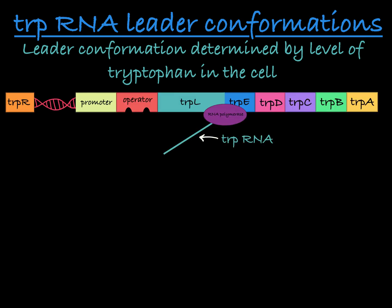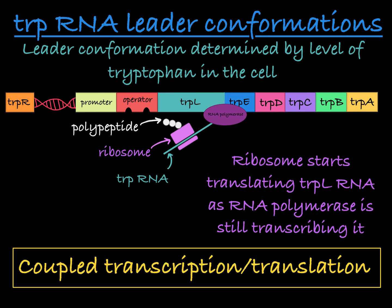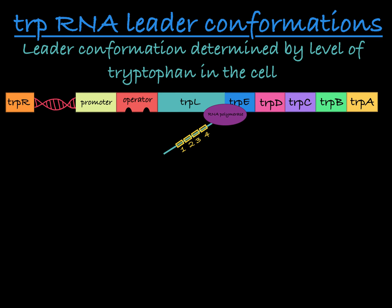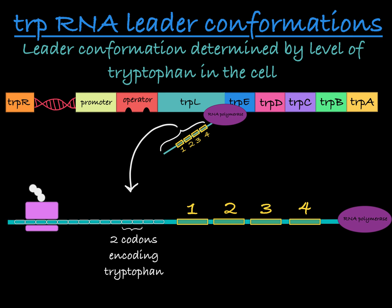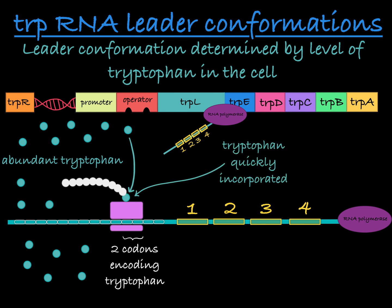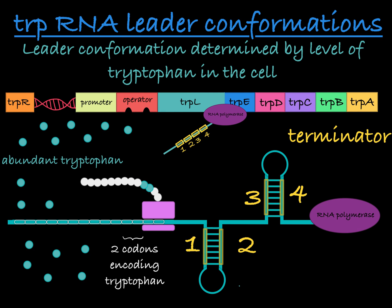As a reminder, in prokaryotes, translation can start on RNA that is not completely transcribed yet. As the RNA polymerase is completing transcription, a ribosome can attach to the RNA already produced and start building protein — this is called coupled transcription-translation. The key to this attenuation process is the sequence at the beginning of the leader: an open reading frame containing 14 codons, two of which encode tryptophan. If there is an abundance of tryptophan, the ribosome moves quickly through this section, and this quick movement allows formation of the terminator hairpin loop, resulting in the attenuated RNA sequence.